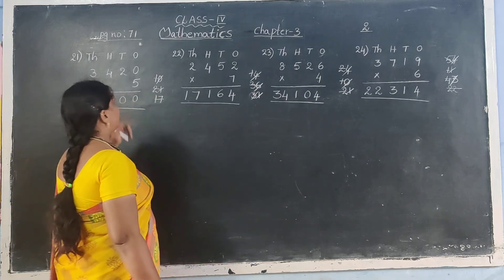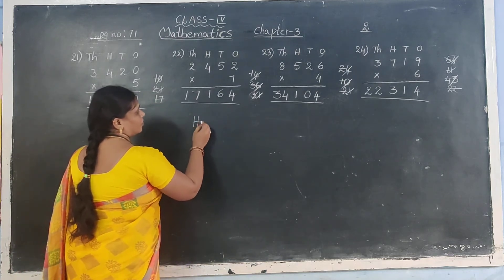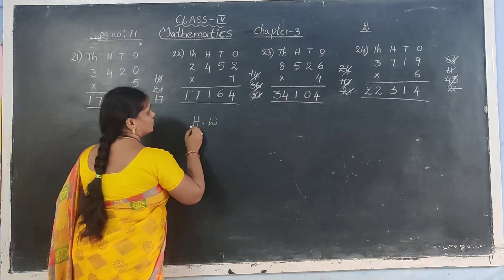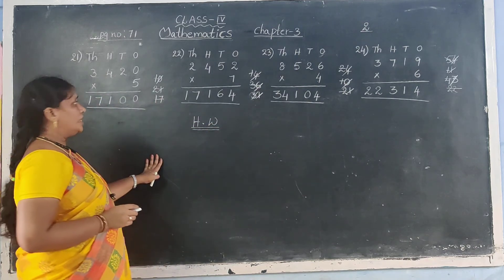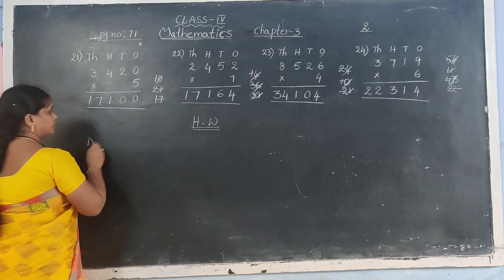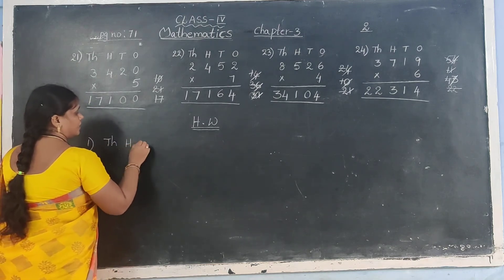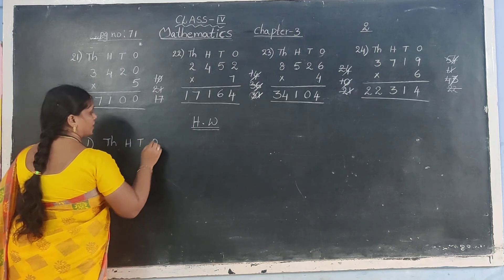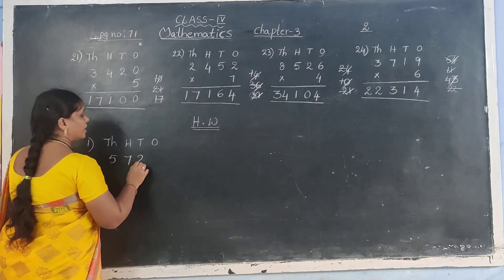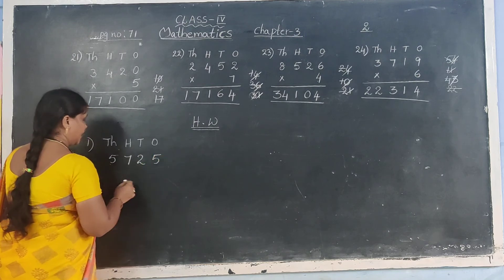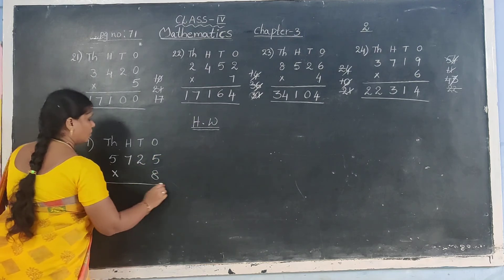Page number 71. Now open your HW books. I will give the sums to write in HW books. First one: 1000s, 100s, 10s, 1s. 5,725 into 8.